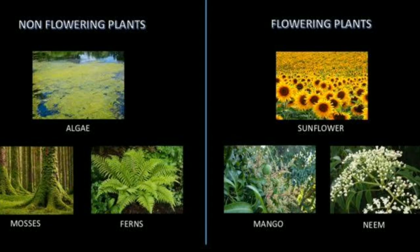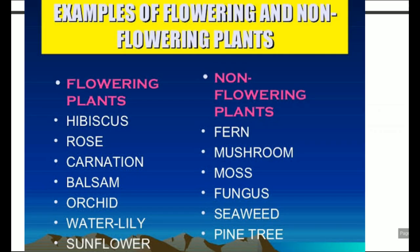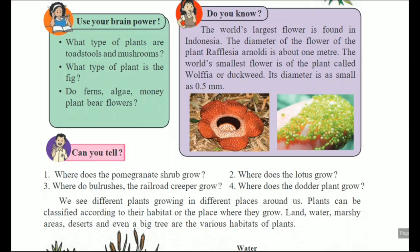Plants that bear flowers are called flowering plants, while plants that never bear flowers are called non-flowering plants. Non-flowering plants may not have organs like roots, stems, and leaves. So according to the presence and absence of flowers, they can be bifurcated into two types.